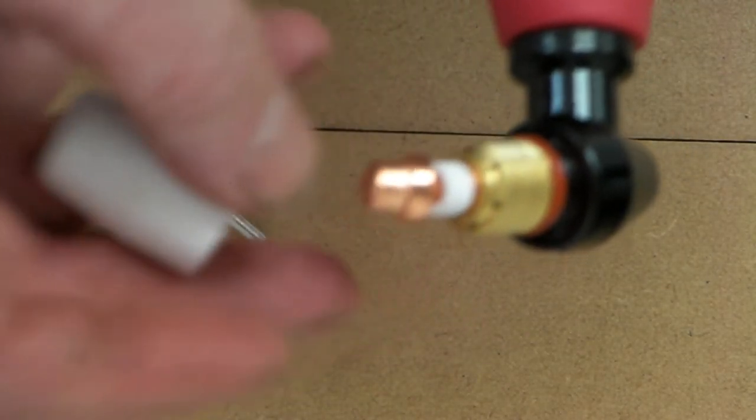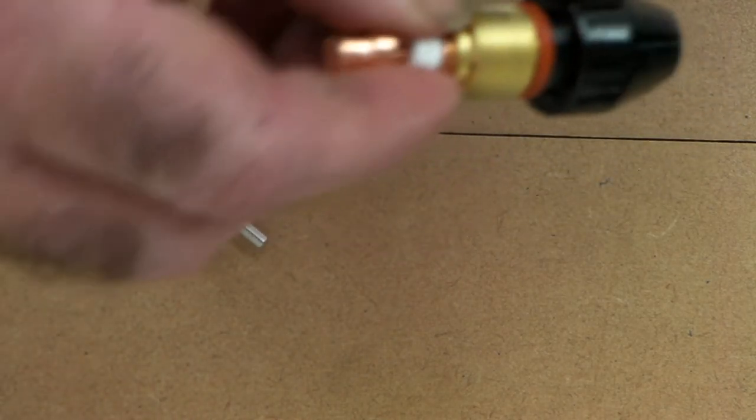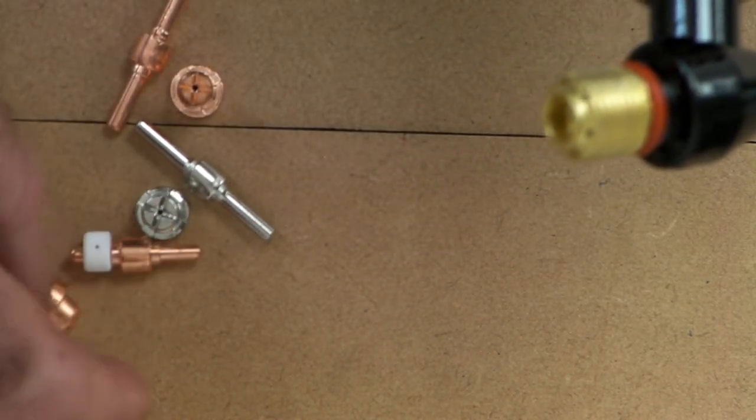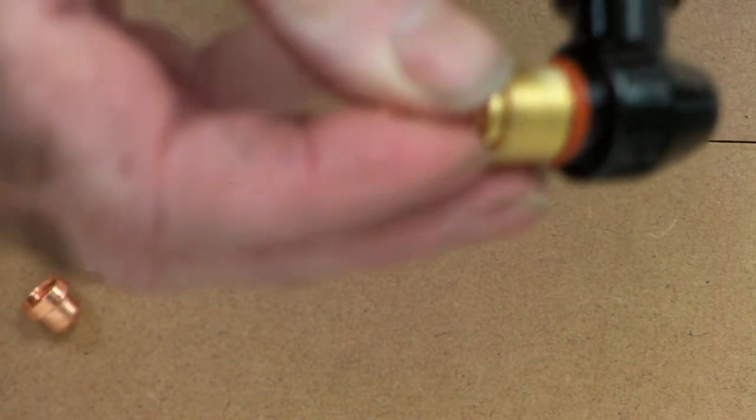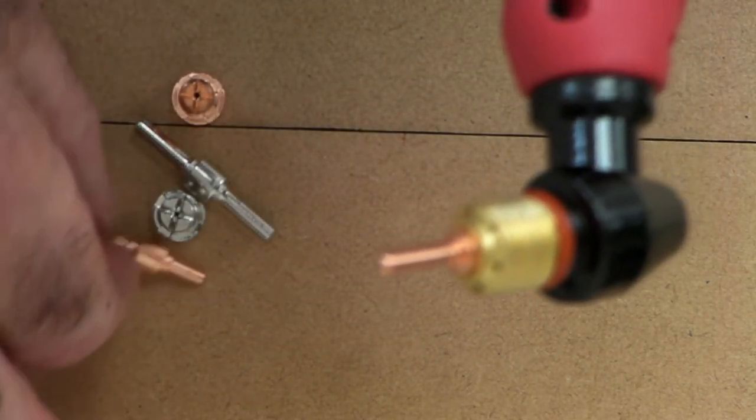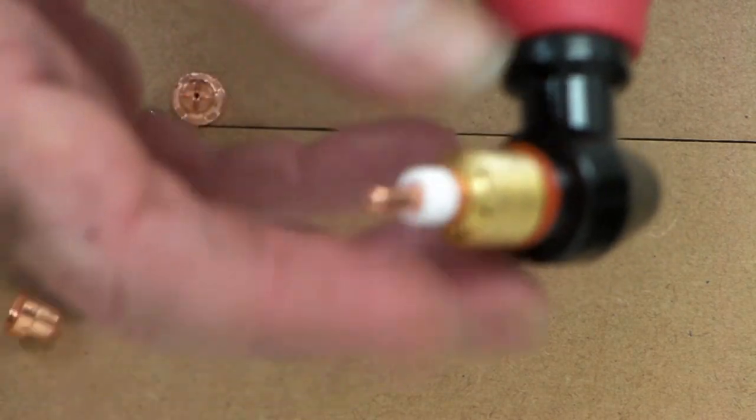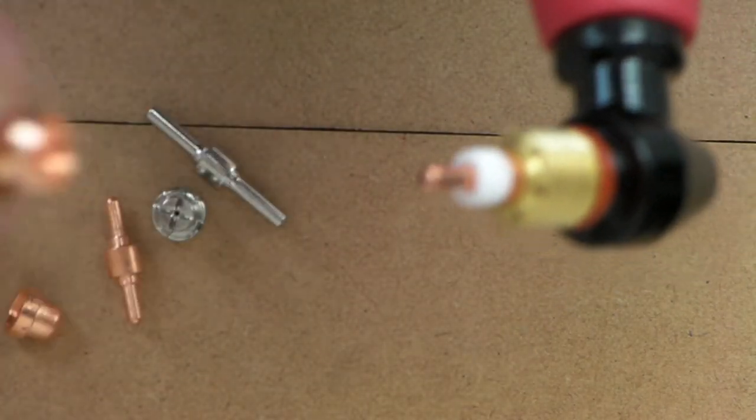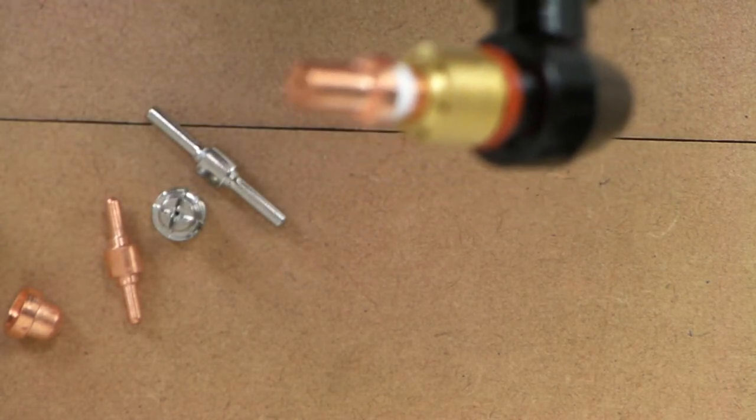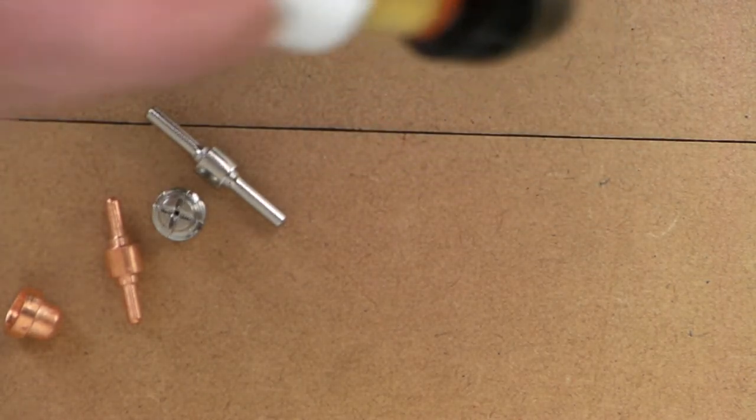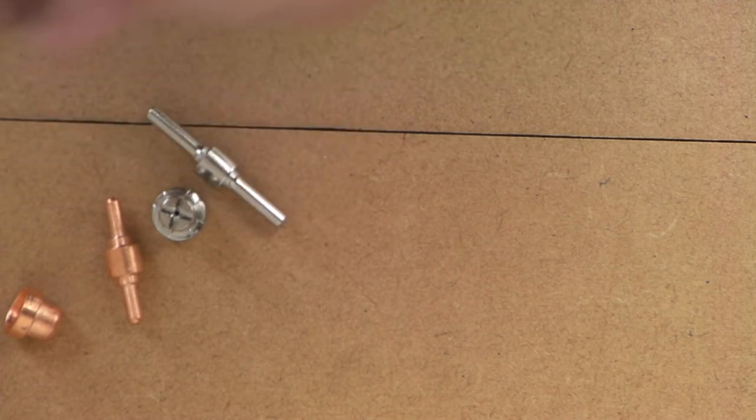But if you're cutting into corners or you want to get to some place where it's hard to get to, use the extendable one. So you put the extendable one in. You use exactly the same swirl ring, but you have to use the extendable tip on the extendable electrodes and the short tip on the short electrodes. Then screw your original cup back on.